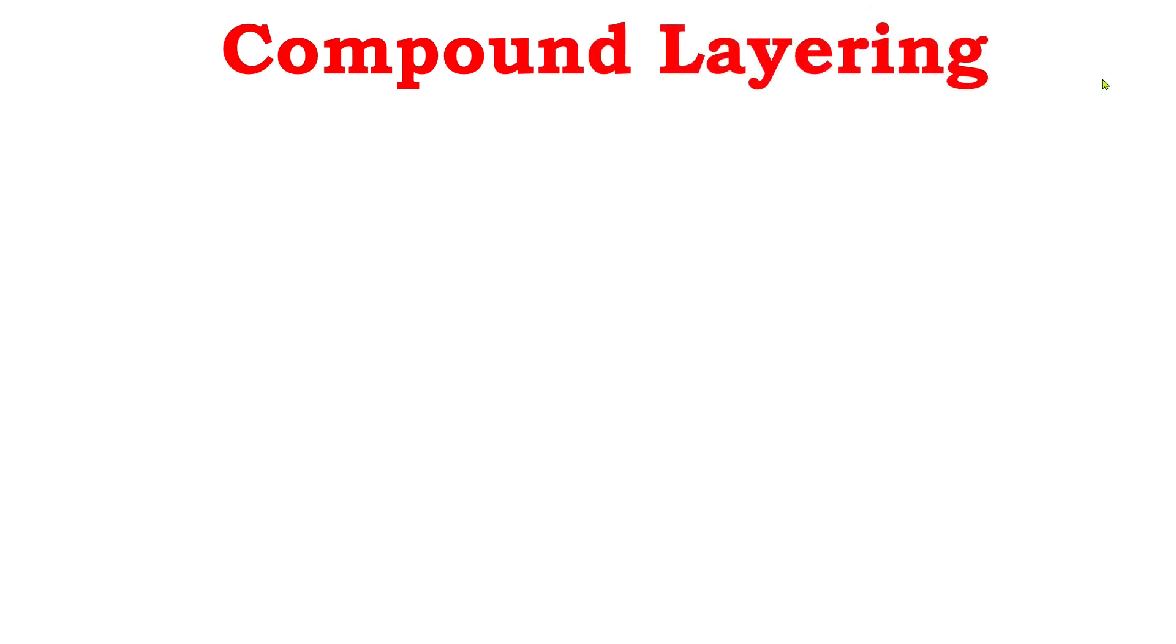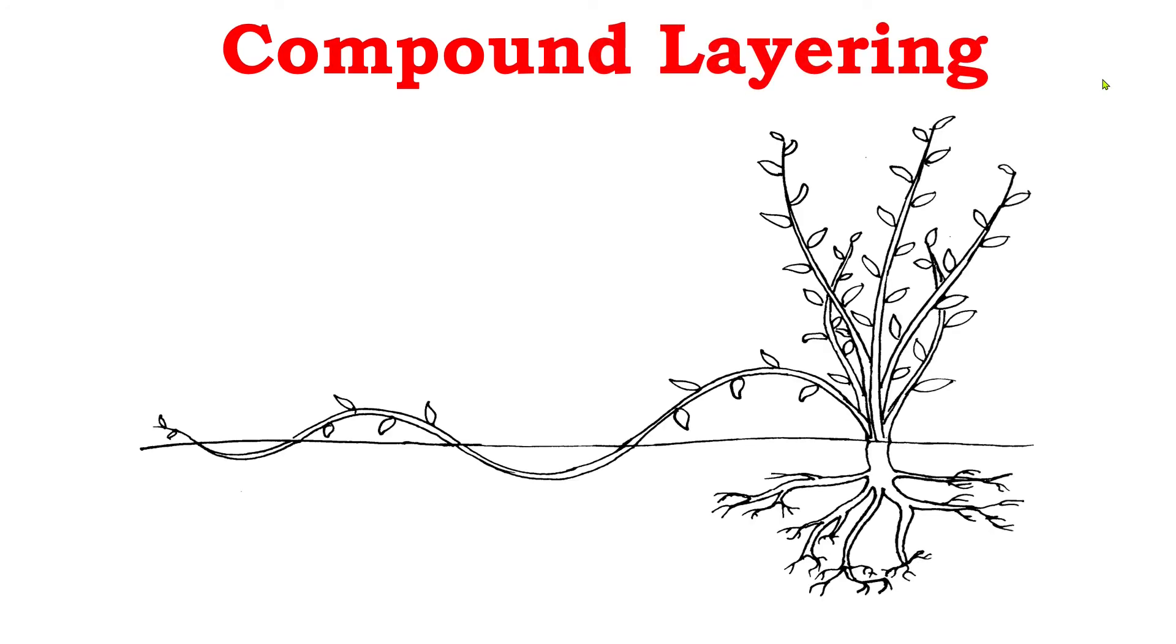Compound layering. What is it exactly? In this method of artificial vegetative propagation, many sections of the long stem of a plant are buried into the ground, as shown in the figure. Then each of the buried parts develops roots into the soil. Later, from each of the nodes, a new plant develops.